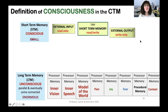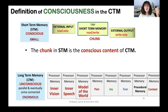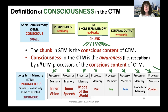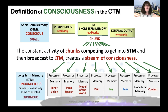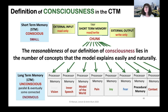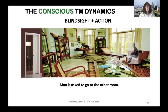For definitions of consciousness in the CTM: the chunk that gets into STM is the conscious content of the CTM. Consciousness in the CTM is the awareness — the reception by all long-term memory processors — of the conscious content. The constant activity of chunks competing to get into STM and then being broadcast to LTM creates a stream of consciousness.